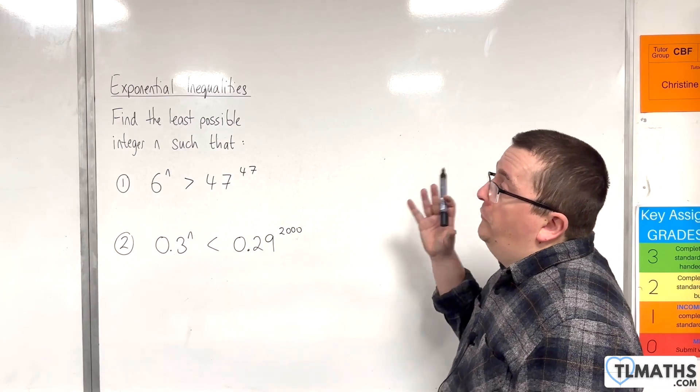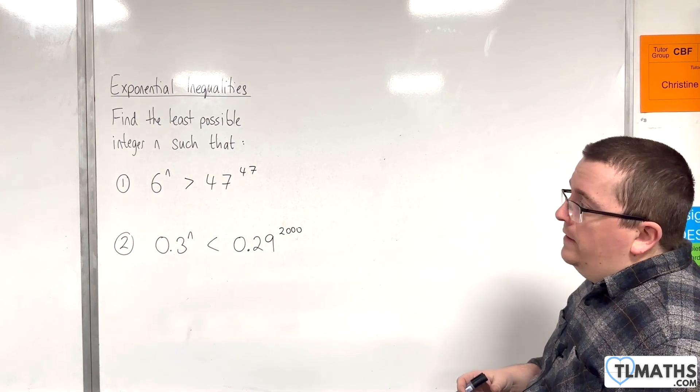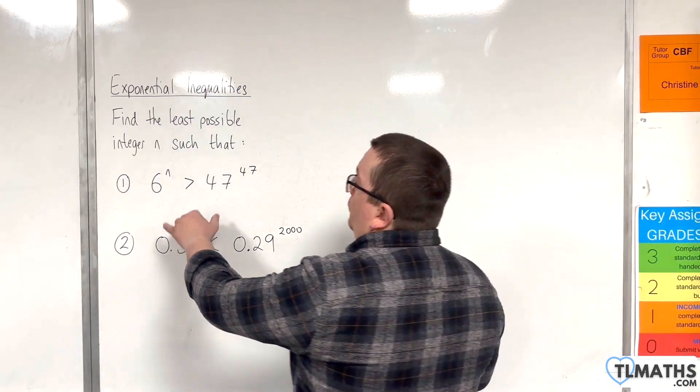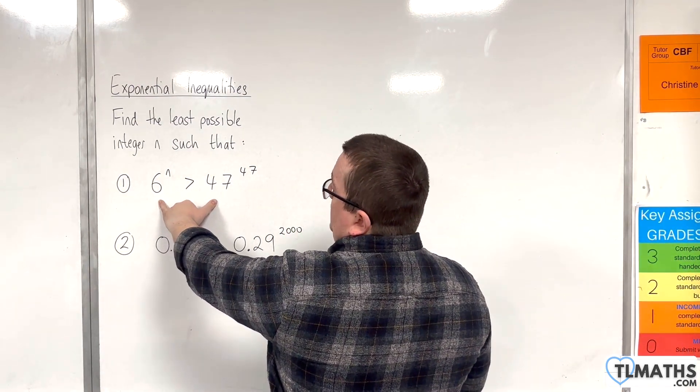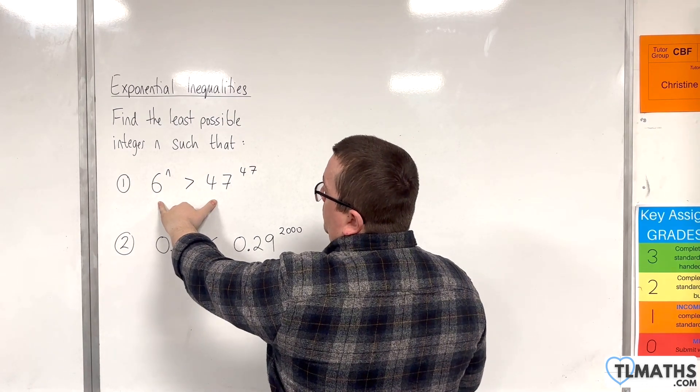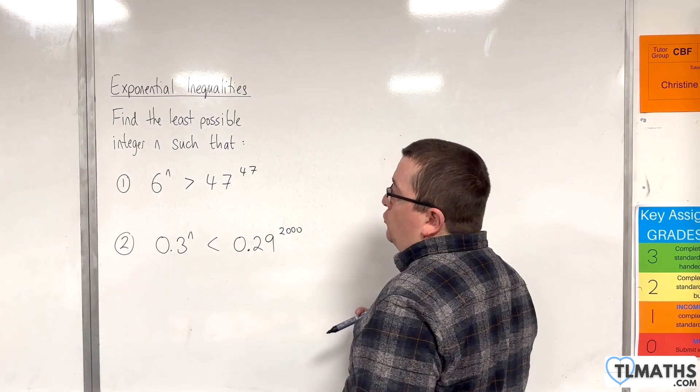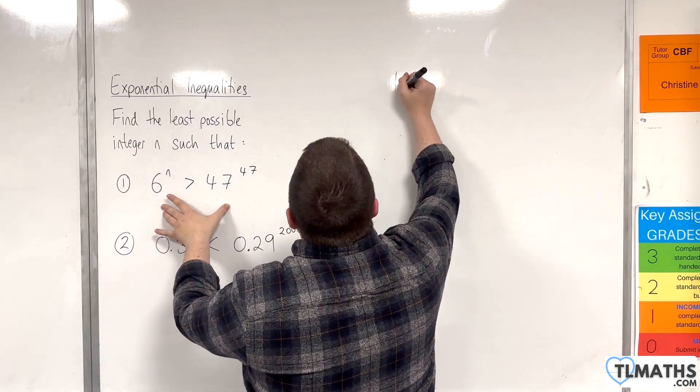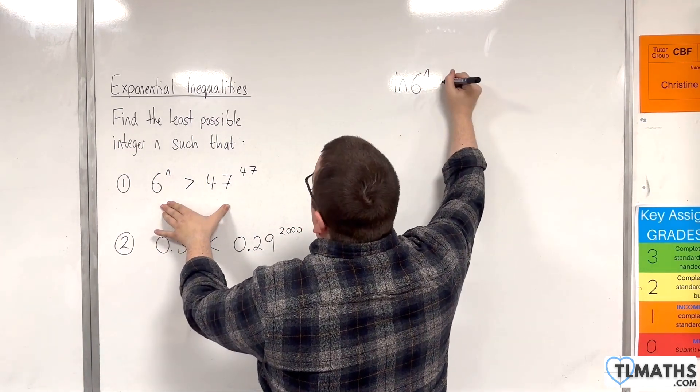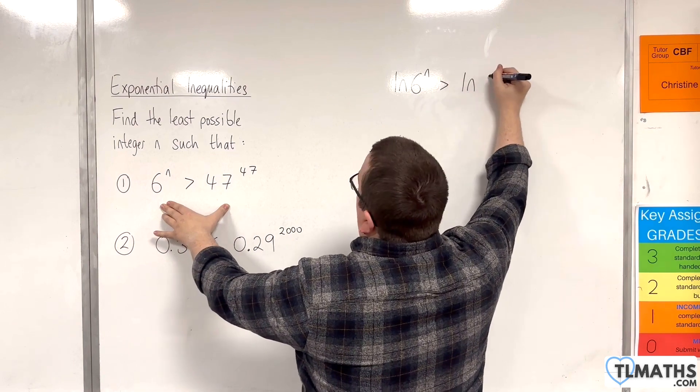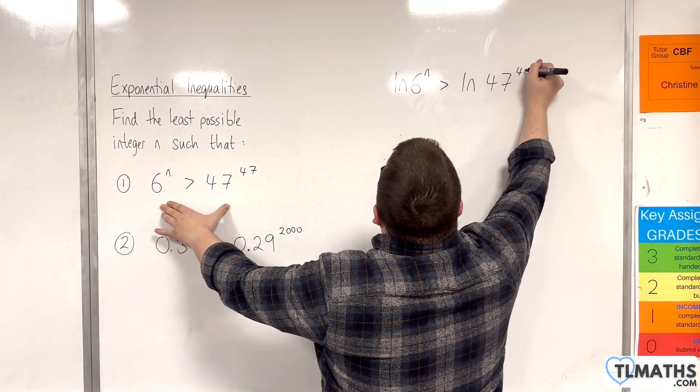In this video we are going to find the least possible integer n such that in our first scenario we've got 6 to the n is greater than 47 to the power of 47. So I'm going to log both sides using the natural logarithm. So the natural log of 6 to the n is greater than the natural log of 47 to the power of 47.